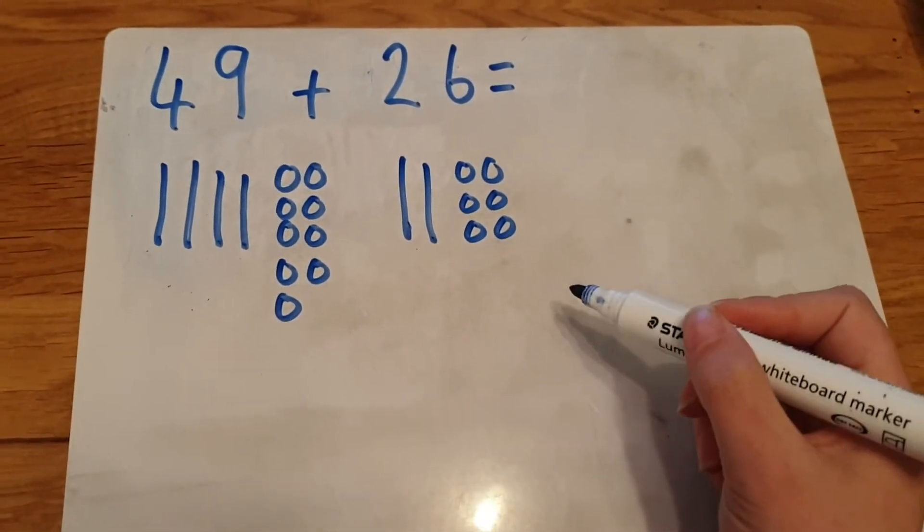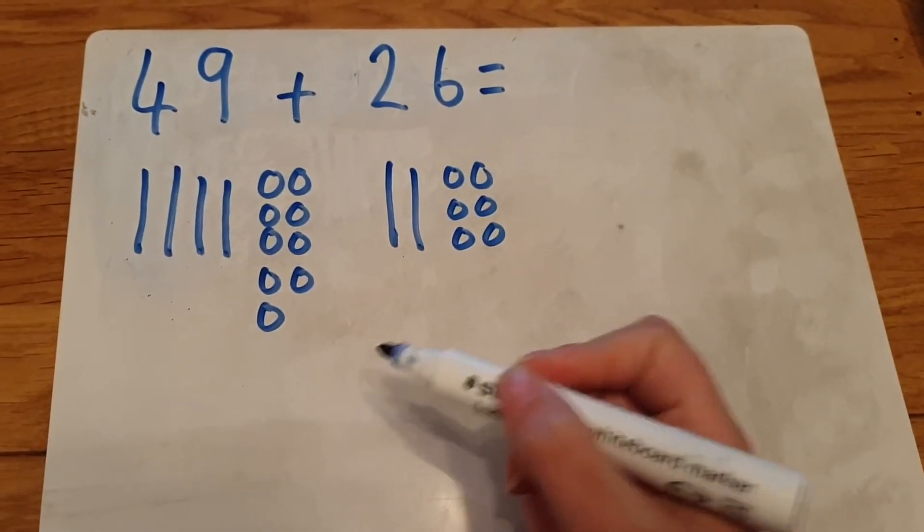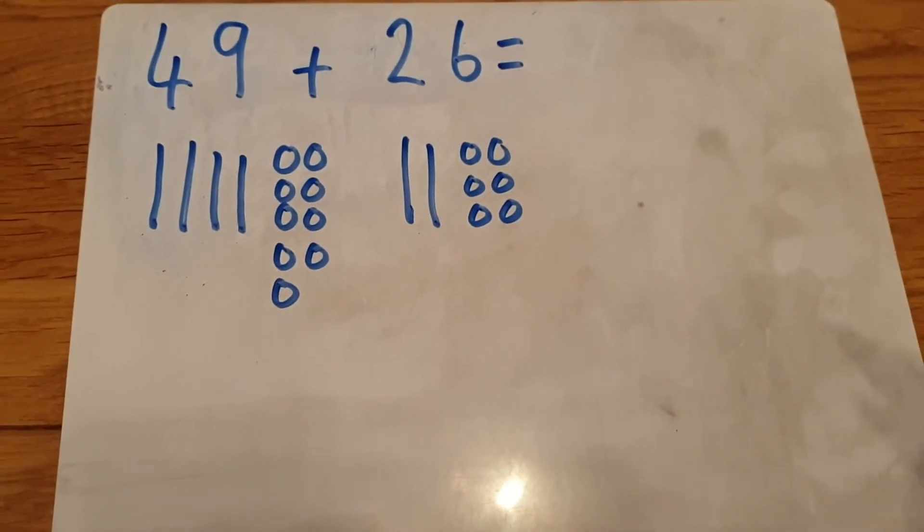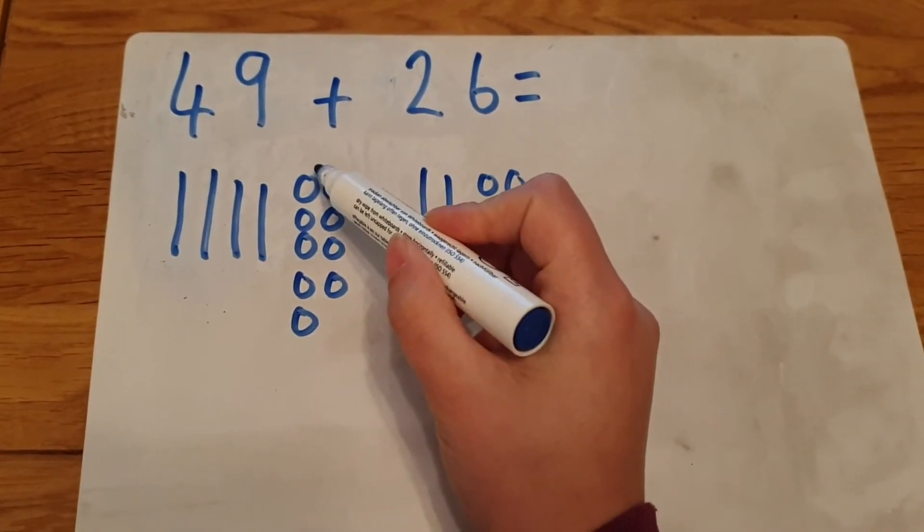So I'm going to exchange ten ones for one ten because remember one ten is equal to ten ones. So I'm going to cross off ten ones.